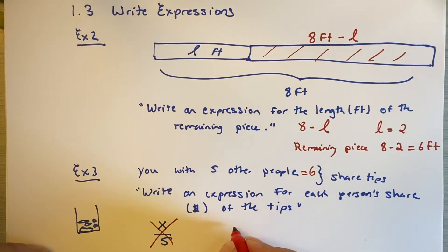There are six people. You with five other people equals six people. And if those six people are sharing the tips, so you've got the dollars of the tips. We're going to call this A for amount. The expression is going to be A, or could have been X. It doesn't matter. Divided by six.